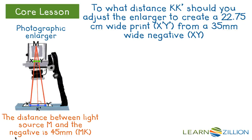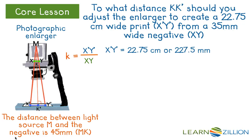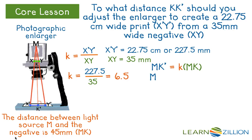We need to find the length of the distance between K and K prime. We must first look at the scale factor K, which is going to equal the length of X prime Y prime divided by X Y. X prime Y prime is 22.75 centimeters, which is the same as 227.5 millimeters, and X Y is 35 millimeters. That ratio is 227.5 divided by 35, which simplifies to 6.5 as our scale factor. Since M is the center of dilation, the length of M K prime will need to be 6.5 times as large as M K. So 6.5 times 45 is equal to 292.5.